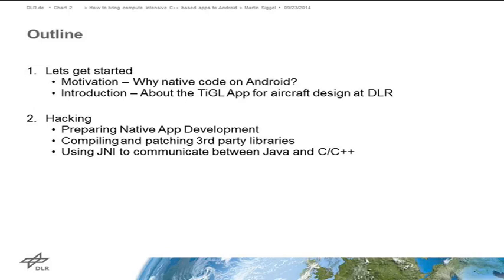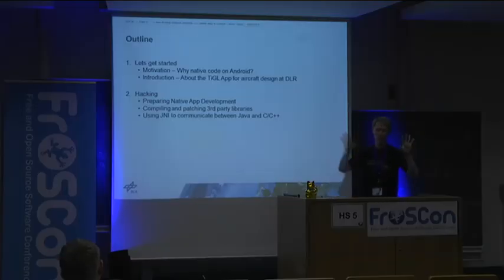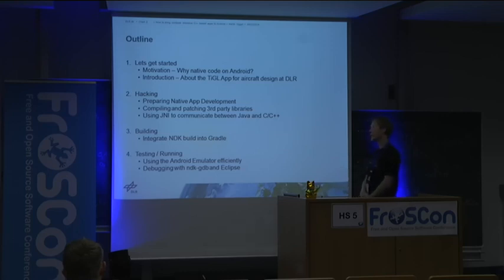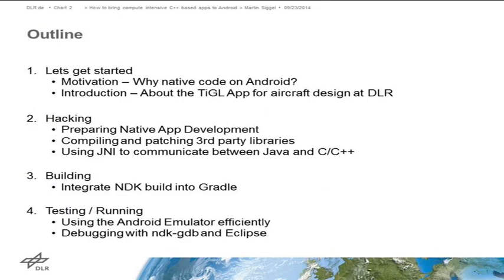Then I'd like to talk about the hacking aspect — what steps you go through when you want to bring your code to Android: how to prepare your environment for native app development, how to compile third-party dependencies and libraries, and how to use the Java Native Interface to communicate between Java code and C or C++ code. Third, I'll discuss building — integrating the native development kit from Google into the Gradle build system. And finally, running and testing everything under an emulator efficiently, using a non-standard emulator, and how to debug your code from Eclipse with the NDK GDB program.